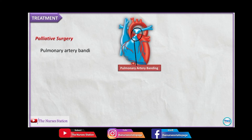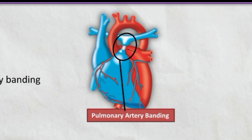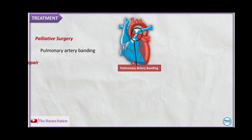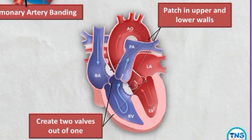The definitive treatment for AV canal defect is surgery. The first intervention is palliative surgery, including pulmonary artery banding, which reduces the severity of signs and symptoms. A band is placed over the main pulmonary artery and tightened to reduce its diameter, thereby reducing pulmonary blood flow and providing symptomatic relief. Complete repair involves surgical patch closure of the septal defects to close the ASD and VSD, and reconstruction of the atrioventricular valve tissue to create two separate valves — the bicuspid and tricuspid valves.